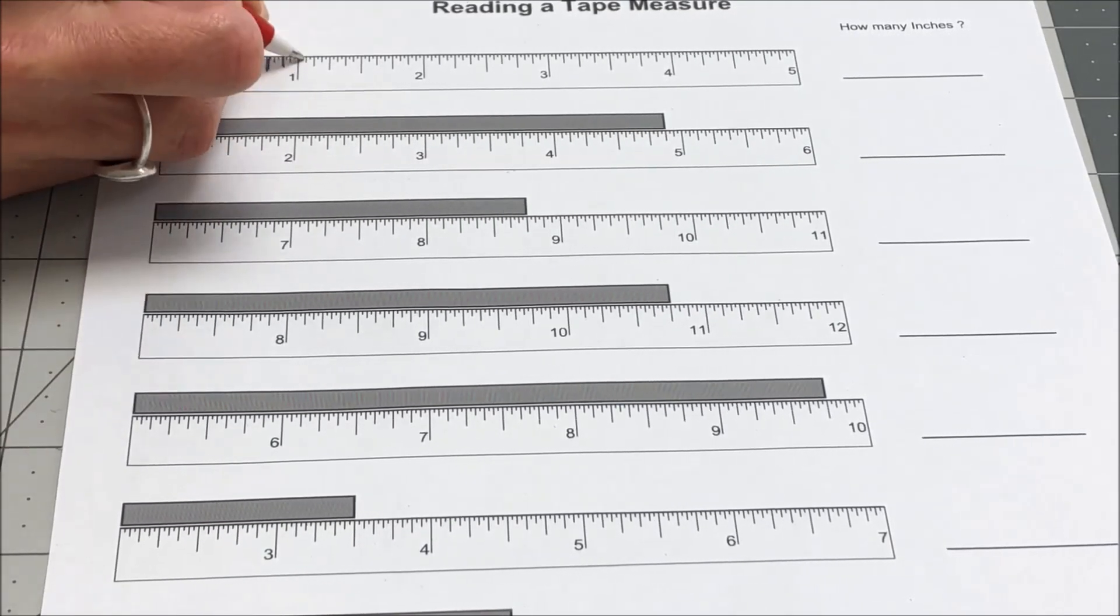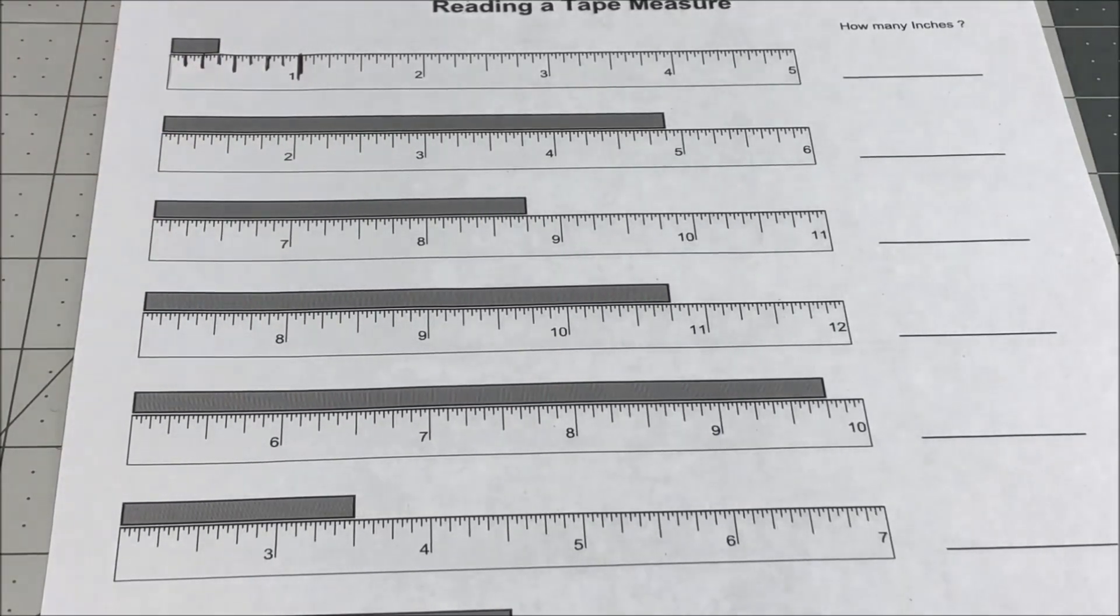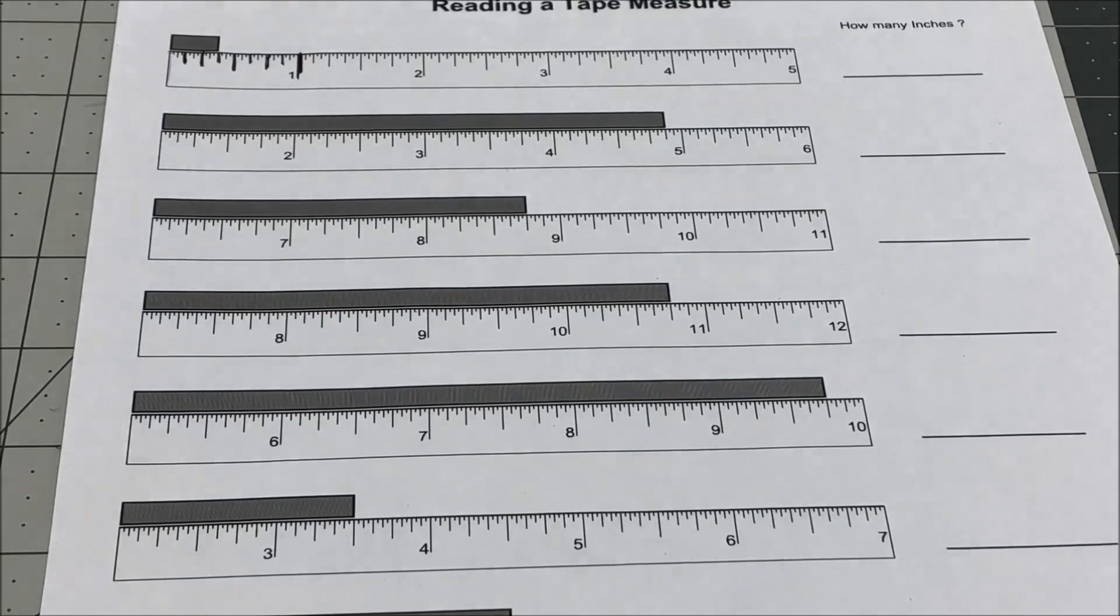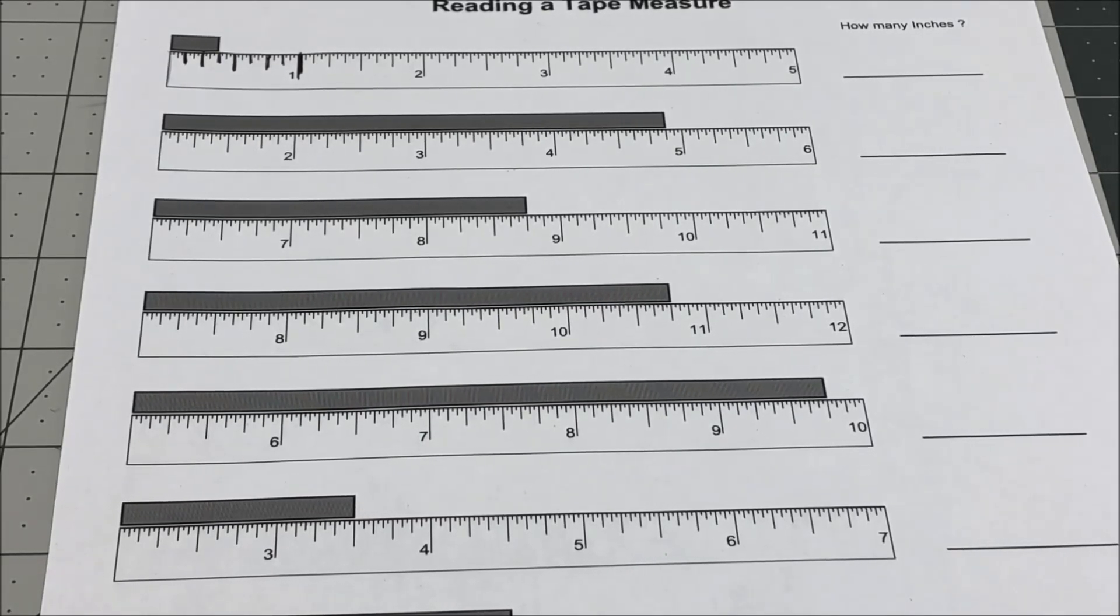Now, if you are doing construction, these littler lines, like the 1/16th or 1/32nds, it can be divided up even smaller, but in sewing, typically the measurement is divided up into 1/8th increments.